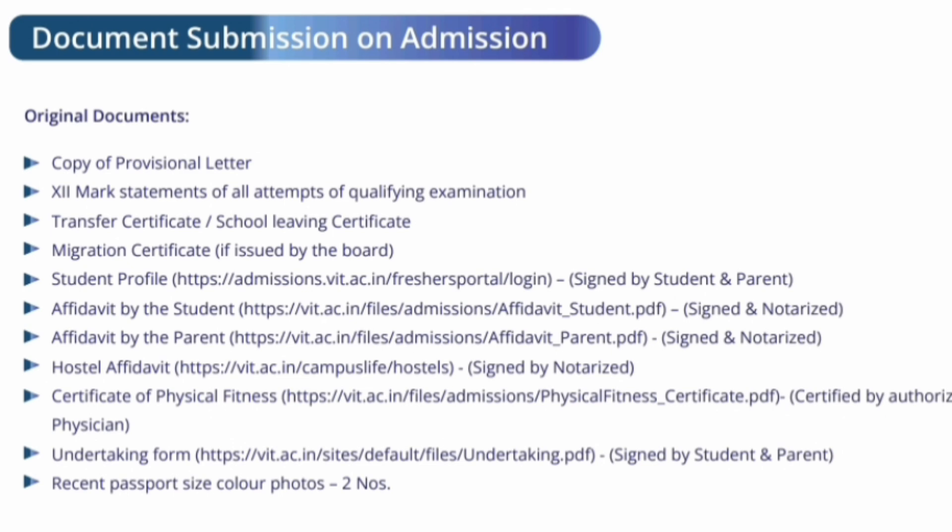There is also a hostel affidavit required, which must be signed and notarized — a template will be provided for this. A certificate of physical fitness signed by a medical practitioner is also needed, and again a template will be provided. Finally, there is an undertaking form to be signed by both the student and parents, downloadable from the website.